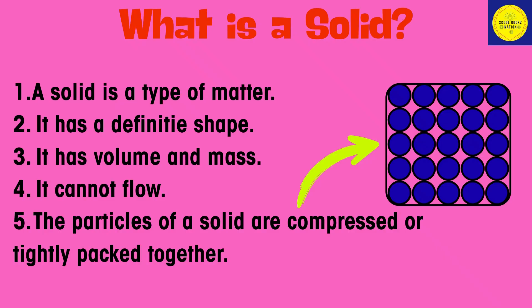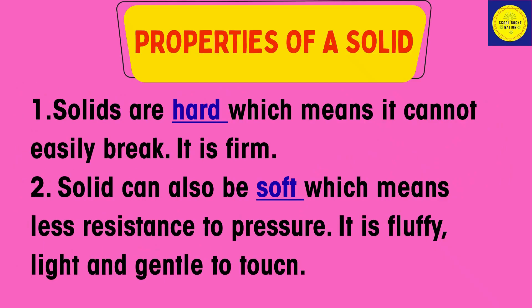A solid is a type of matter. It has a definite shape. It has volume and mass. It cannot flow. The particles of a solid are compressed or tightly packed together.